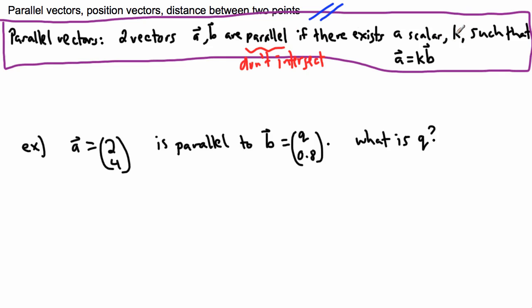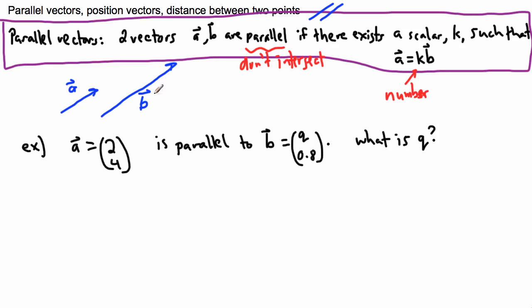There exists some scalar k, and remember k is just some number — it can be any number: one, two, ten, five billion, whatever. So there exists a number where you can multiply one vector by it and get the other. Maybe I have one vector called A and another called B. The question is, mathematically speaking, does there exist some number that I can multiply one by to get the other?